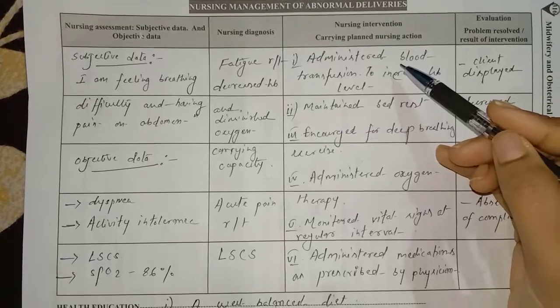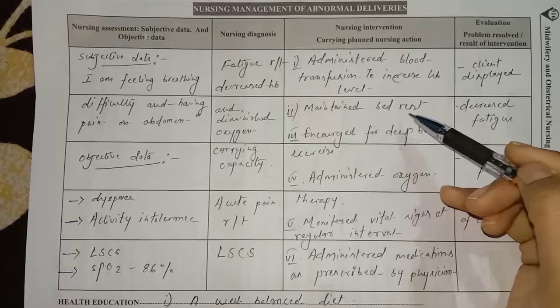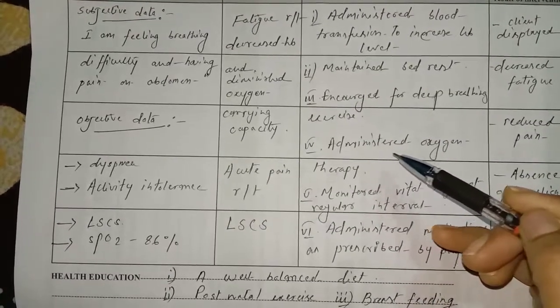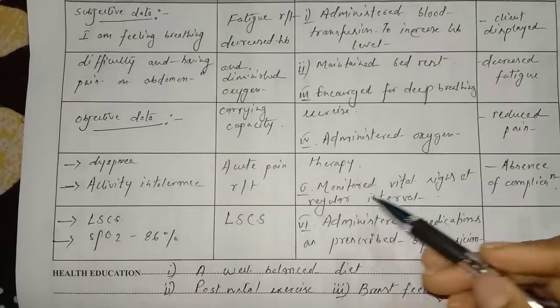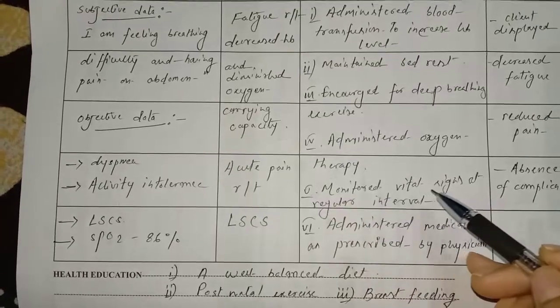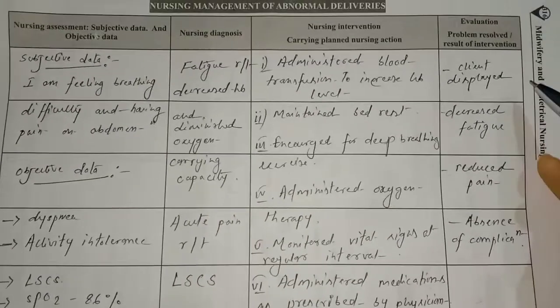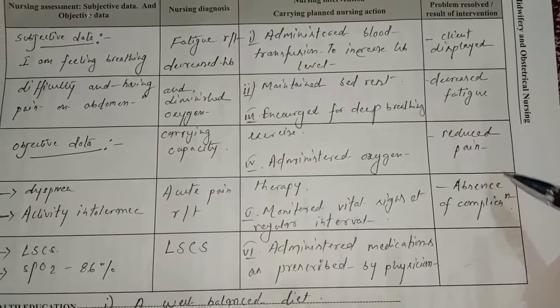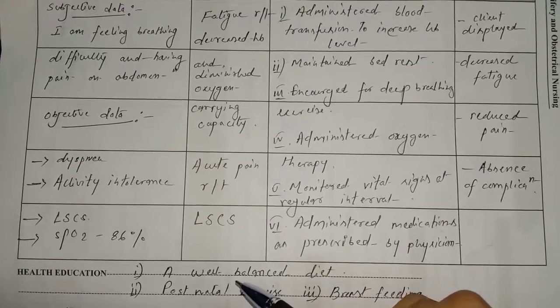Nursing interventions: administered blood transfusion to increase hemoglobin level, maintained bed rest to restore energy, encouraged deep breathing exercises as a technique for restoring energy, administered oxygen therapy as SpO2 level was low at 86%, monitored vital signs at regular intervals, and administered medication as prescribed by physicians. Evaluation: client displayed decreased fatigue, reduced pain, and absence of any complications.